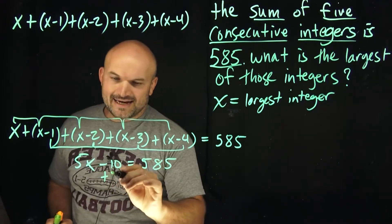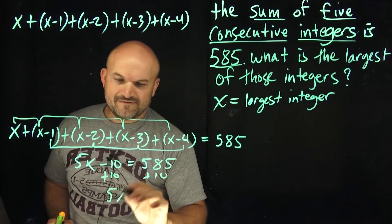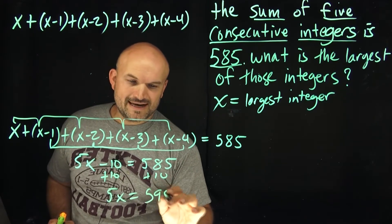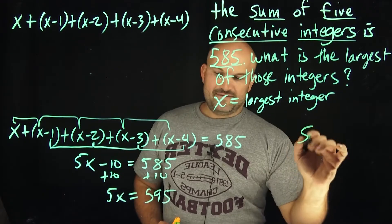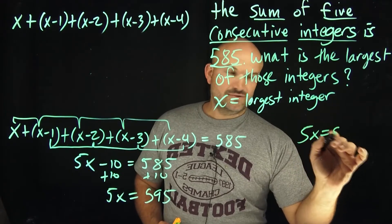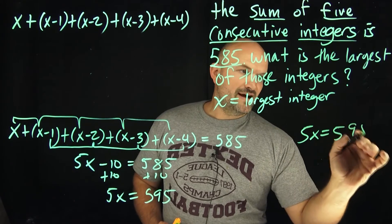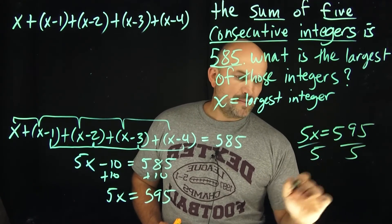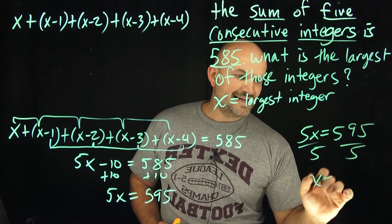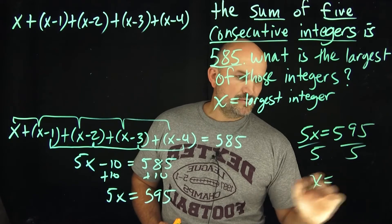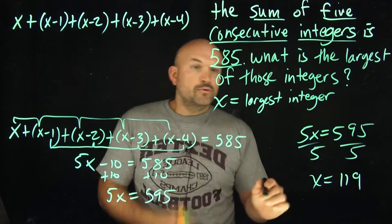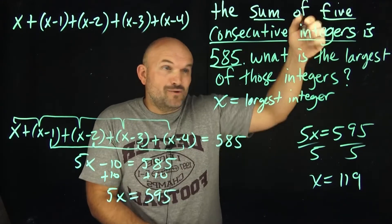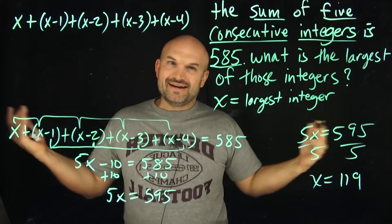If I add 10 to both sides, I have 5x equals 595. Now I just divide by 5, and x is going to equal 119 — which is our answer, which is what the question is asking for.